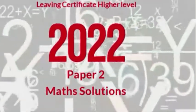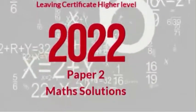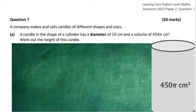We're on to question 7 of paper 2. This question is mainly areas and volumes. So the first part is finding the height of the candle given the volume.